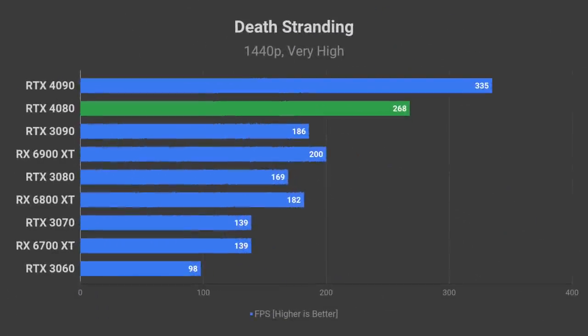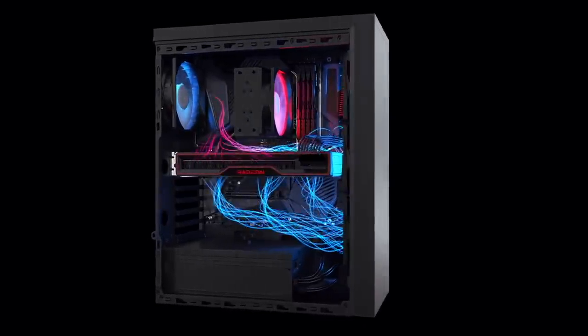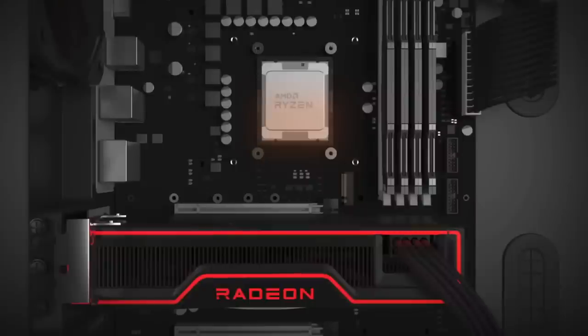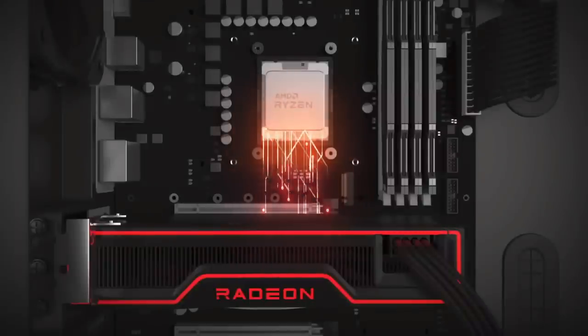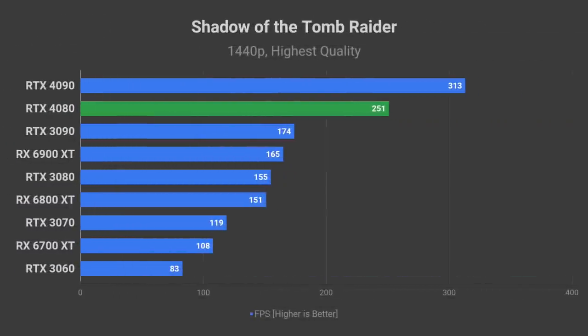Theoretically, the RTX 4080 should allow over 260 FPS in Death Stranding at 1440p; however, I do not know if that will be possible due to CPU and game engine constraints — and that applies to the following games as well. Horizon Zero Dawn should be able to break past 200 FPS, and Shadow of the Tomb Raider over 250 FPS on the highest quality preset.